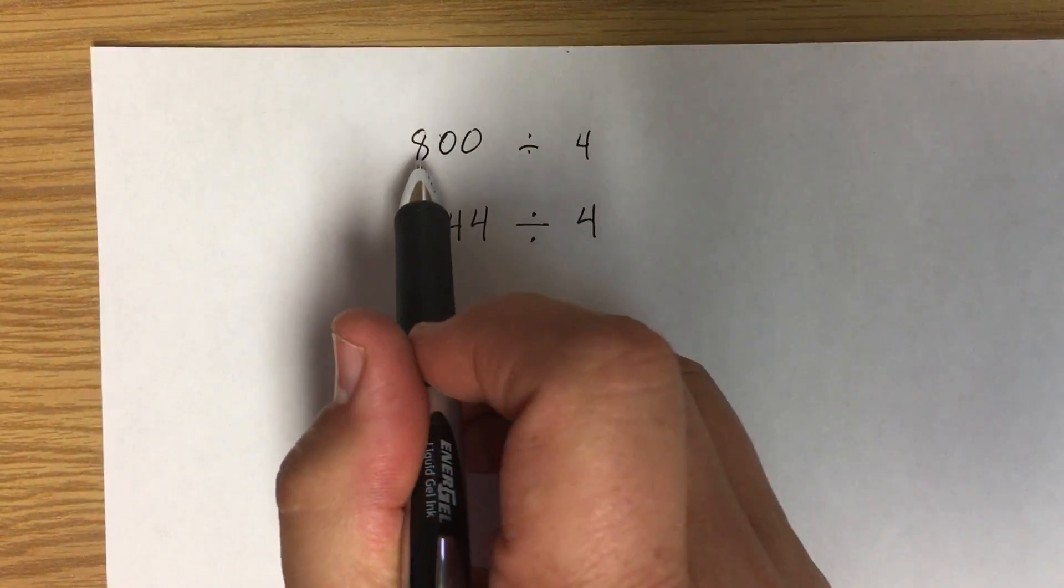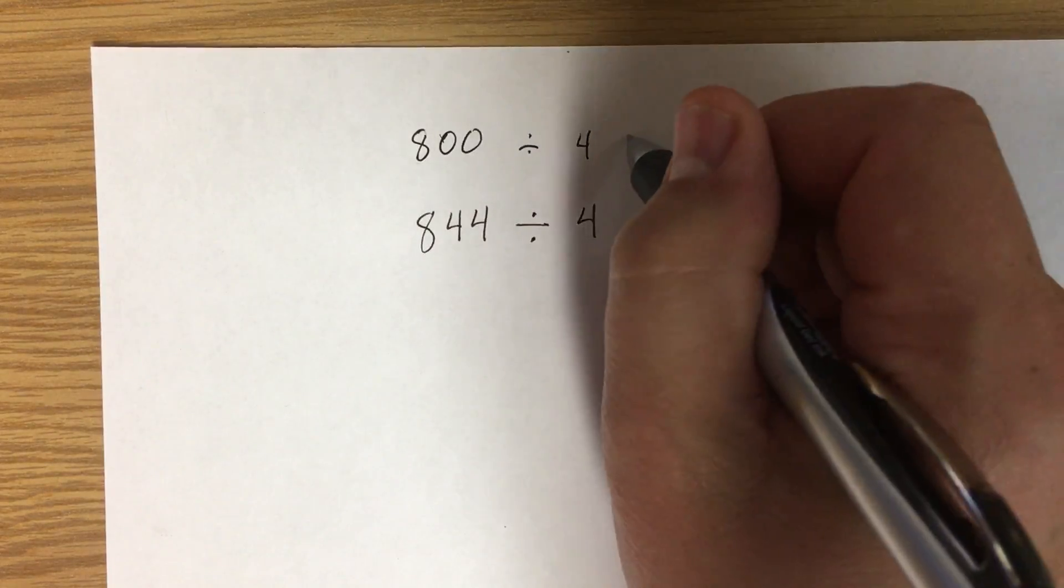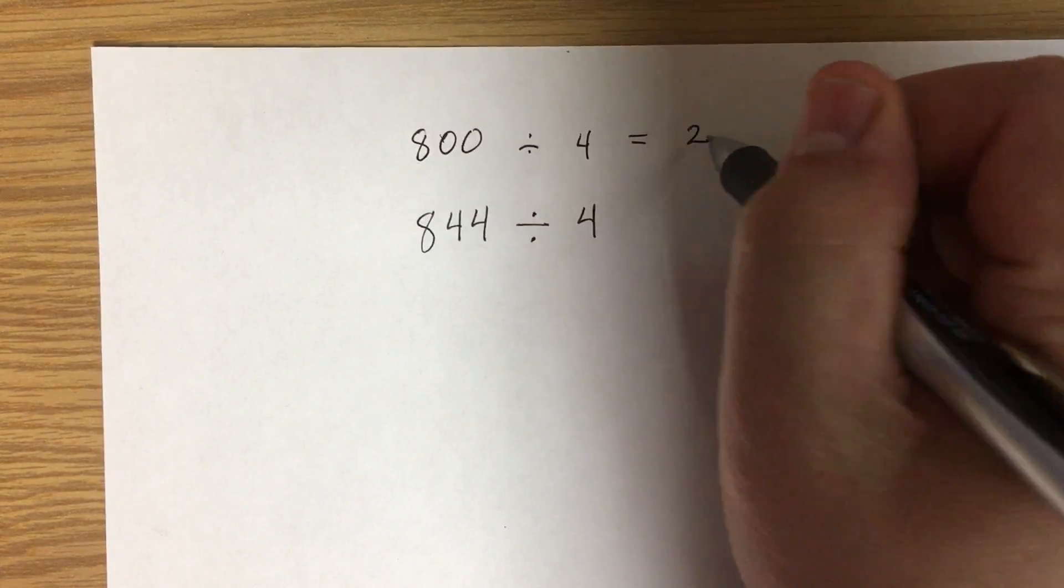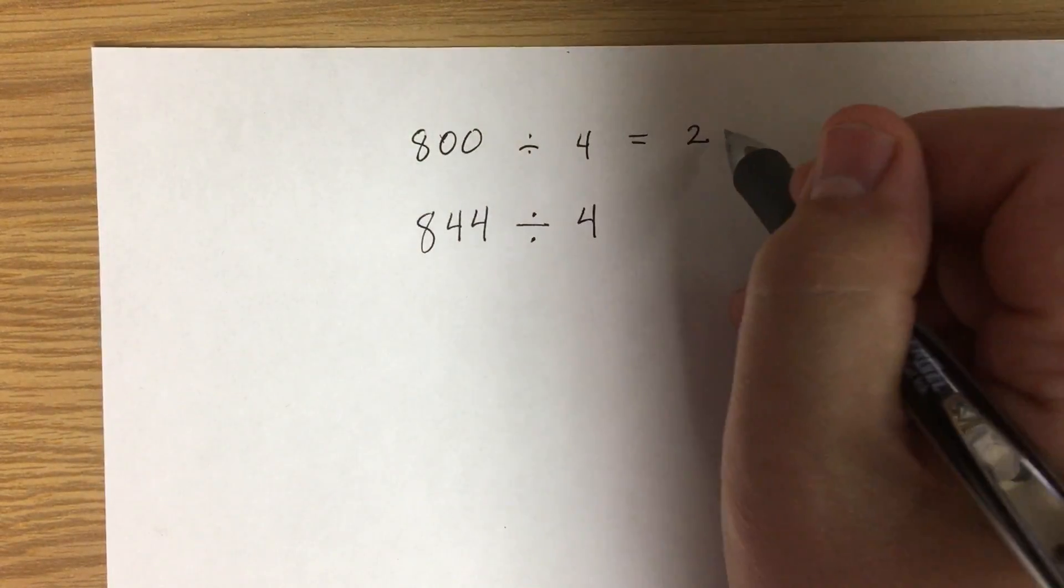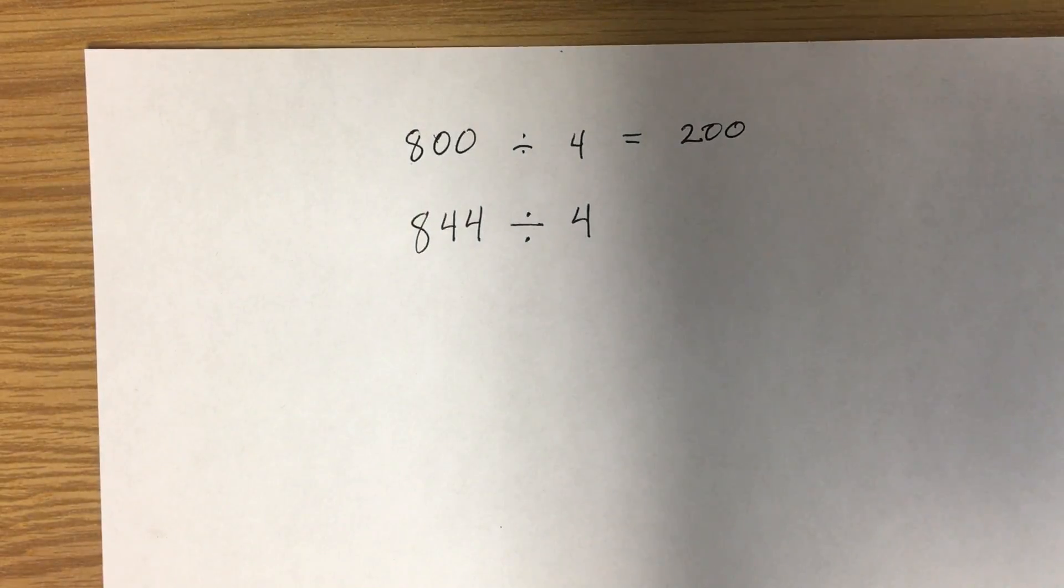And then we're just going to divide 800 divided by 4. The 8 divided by 4 is 2. I have two 0's minus no 0's is two 0's. So our estimate is 200.